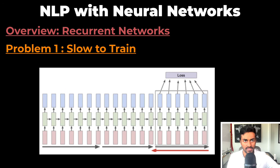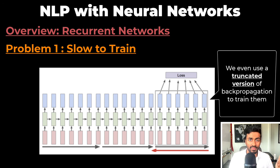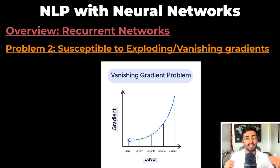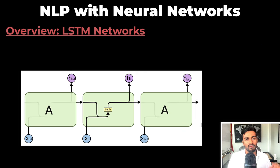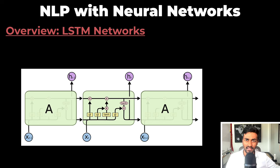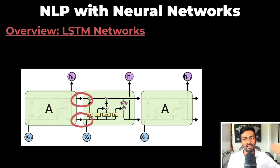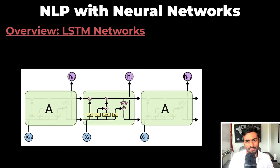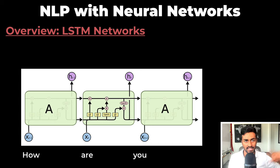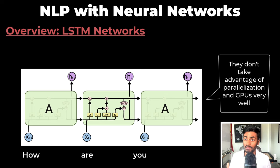But recurrent neural networks have problems. First, they are slow to train, and we even use a truncated version of backpropagation to train them. These recurrent neural networks are also susceptible to exploding and vanishing gradients during training, which is particularly true when dealing with longer sequences. Replacing standard neurons with the complex LSTM cell helps address that second point of long sequences pretty well — this connection to previous cell iterations is used to retain memory for longer sequences. But the first point on slower training still remains true.